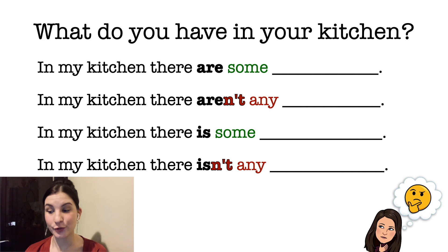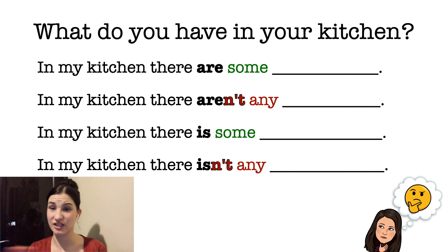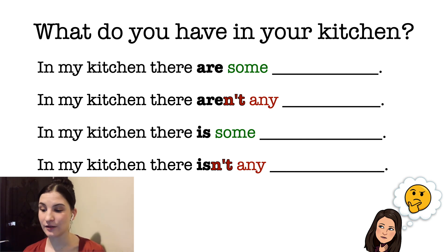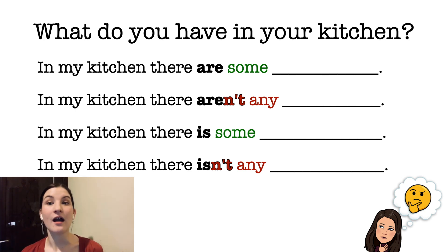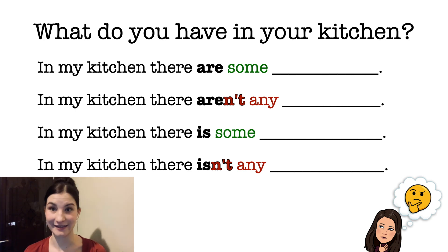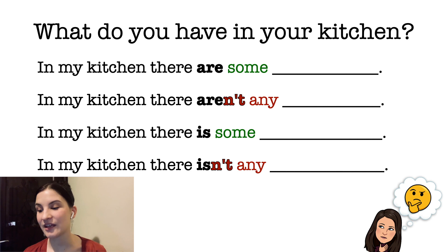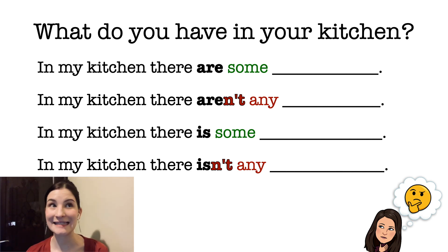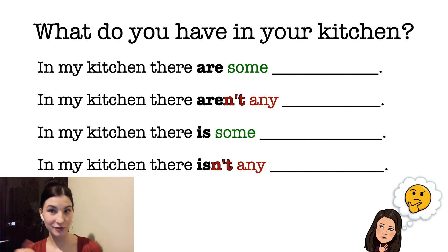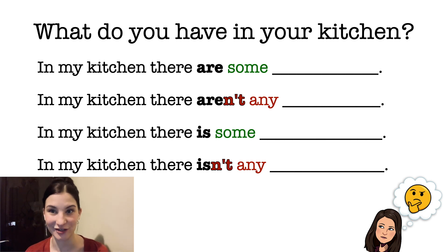And I have a question for you: what do you have in your kitchen? You can say the sentences — don't write them. For example: 'In my kitchen there are some apples. In my kitchen there aren't any pears. In my kitchen there is some water. And in my kitchen there isn't any milk.' What about you? Say sentences about yourself, about your kitchen.